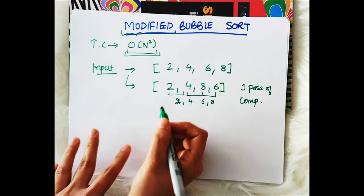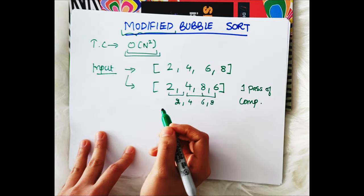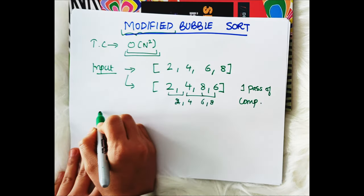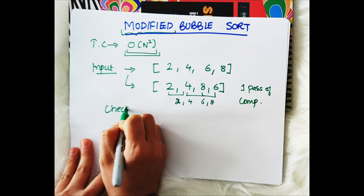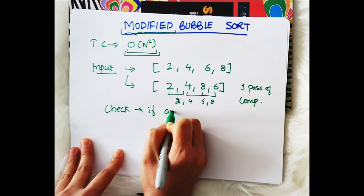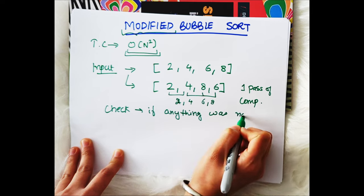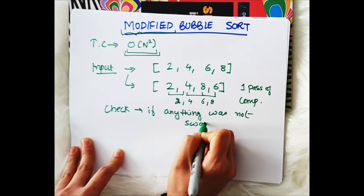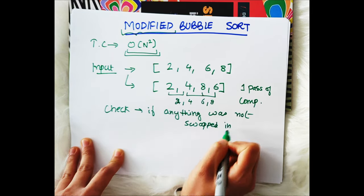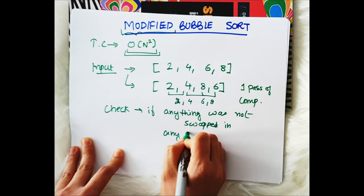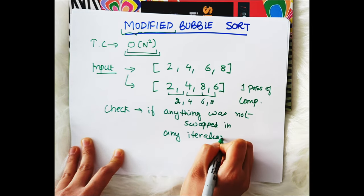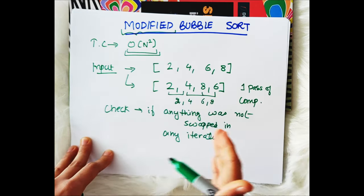And that's why we have this modified bubble sort in which what we do is we check if anything was not swapped in any iteration. So basically for each i we used to do iterations, right? So if in any of the iterations nothing is swapped, that means our array is sorted.